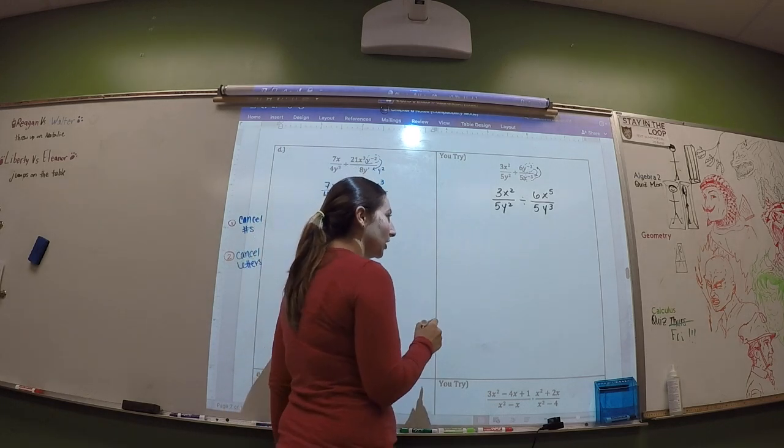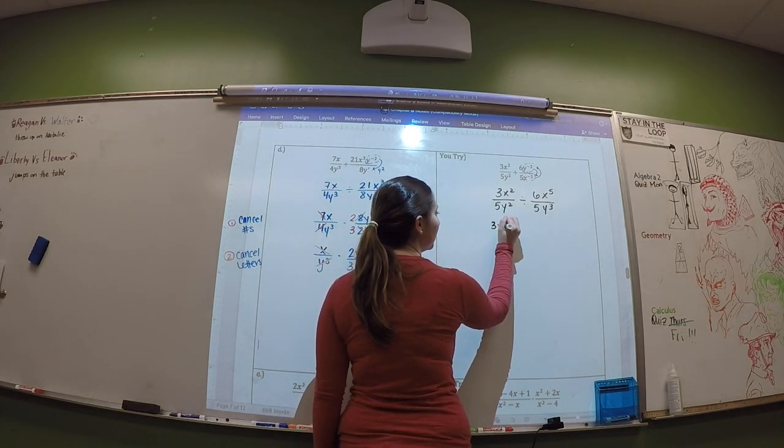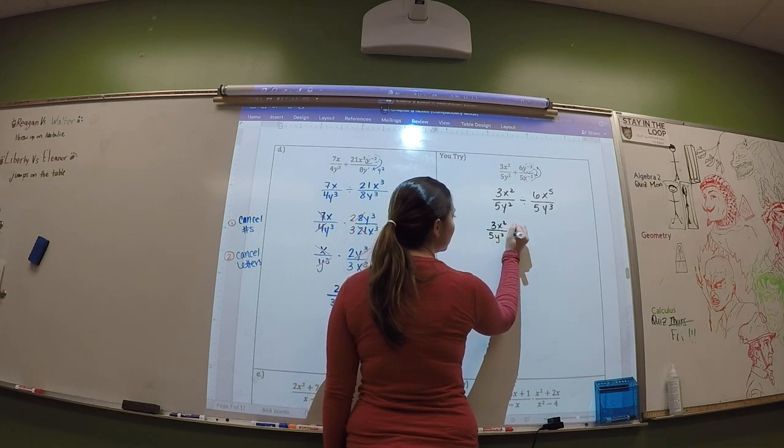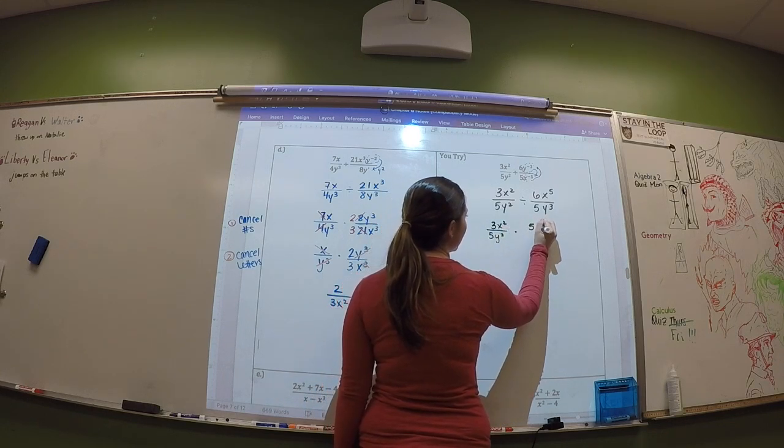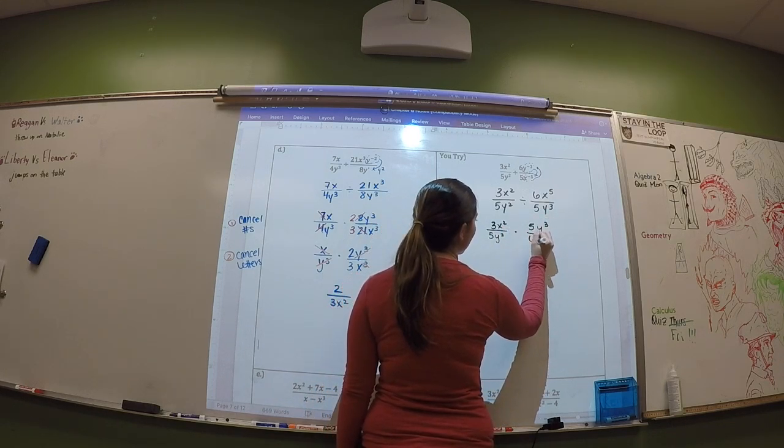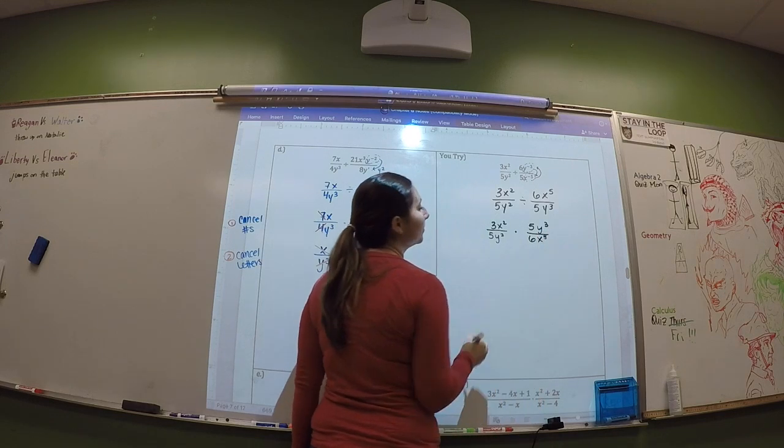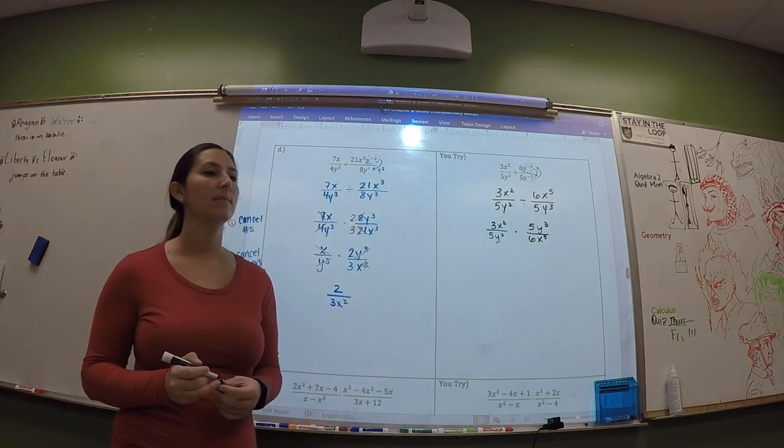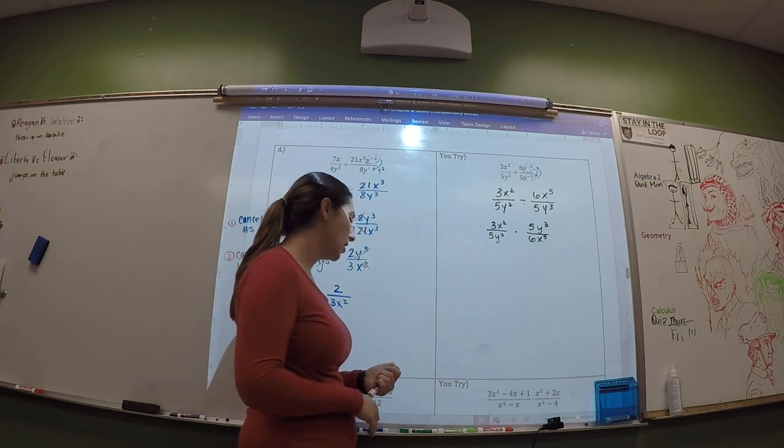Now we will keep, change, flip. So keep, change, and flip. And we're doing this because division is multiplying by the reciprocal. Oh, you changed that sign. Yeah. So I'm multiplying by the reciprocal. You flip a loop.